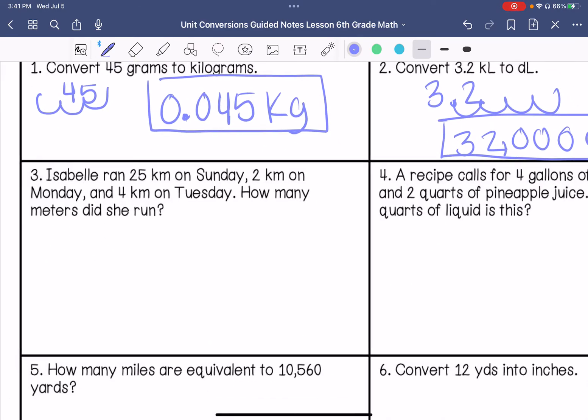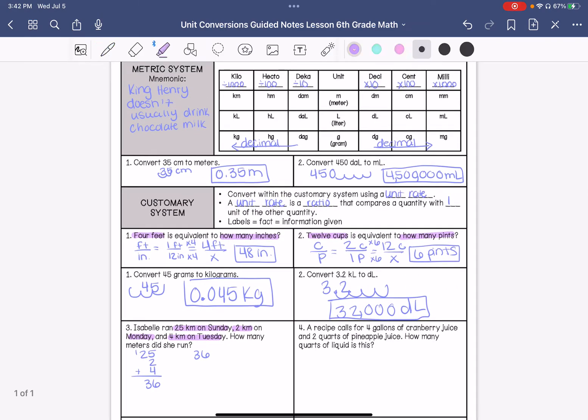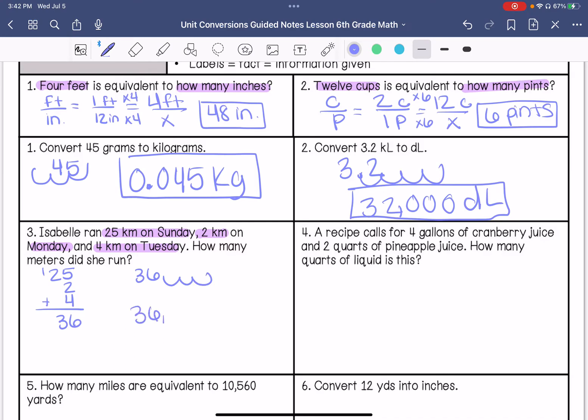Number three, Isabel ran 25 kilometers on Sunday, 2 kilometers on Monday, and 4 kilometers on Tuesday. How many meters did she run? I'm going to look at the total kilometers she ran first. So that's 36 kilometers. I'm sorry, I added wrong. This is 31, so that would be 31,000 meters.